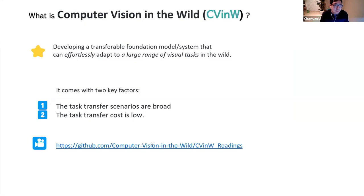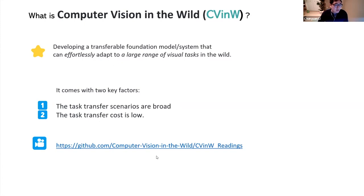What is computer vision in the wild? We are trying to provide our definition in one sentence: developing a transferable foundation model or system that can easily adapt to a large range of visual tasks in the world. There are two key factors: the task transfer scenarios are broad, and the task transfer cost is low. For those who are new to this topic, we have compiled a reading list you can check out to get started.